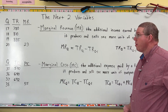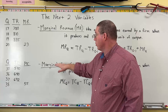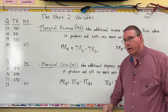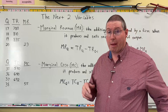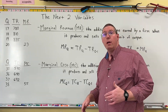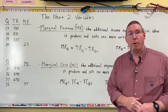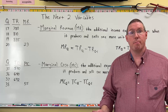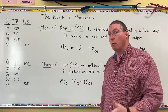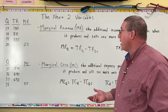Our next two variables are called marginal revenue and marginal cost, MR and MC. These two variables are related to — they're basically the same thing as — if you think back to our lesson on utility maximization, the last lesson where we talked about how individuals want to maximize their utility. We learned about total utility and marginal utility. This is the same idea.